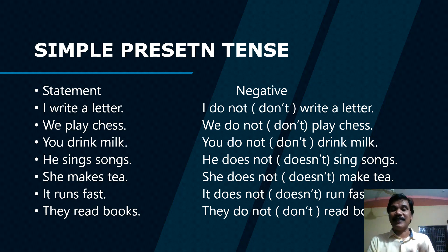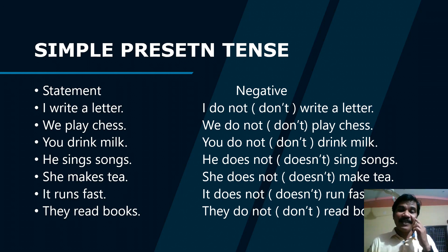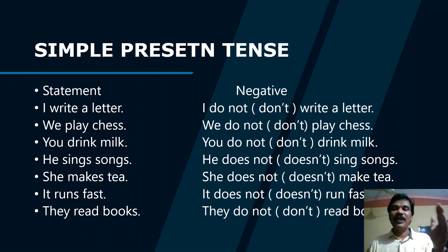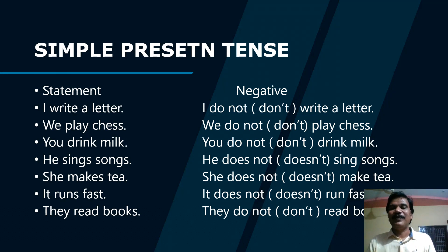To construct a negative sentence, start with the subject-verb-object structure, then add 'do not' or 'does not.' Here is a tip: when the subject is a third person singular — he, she, or it — in simple present tense we add 's' or 'es' to the verb. In negative sentences, the 's' or 'es' moves to 'does.' So 'he sings' becomes 'he does not sing.' Keep this in mind.